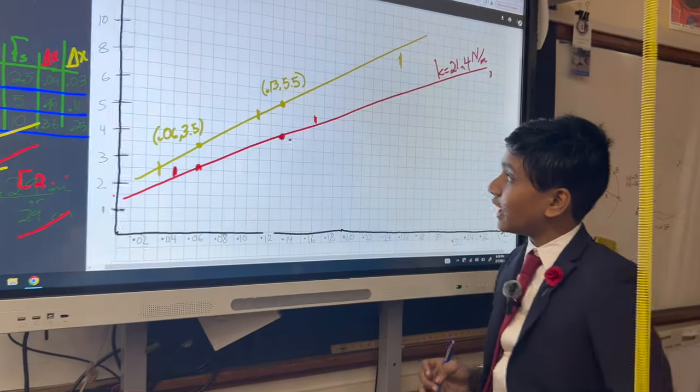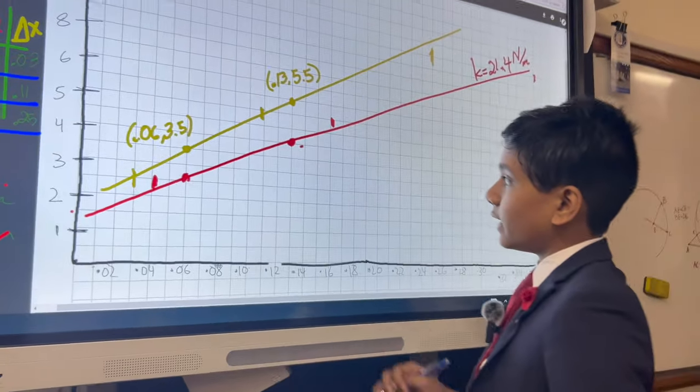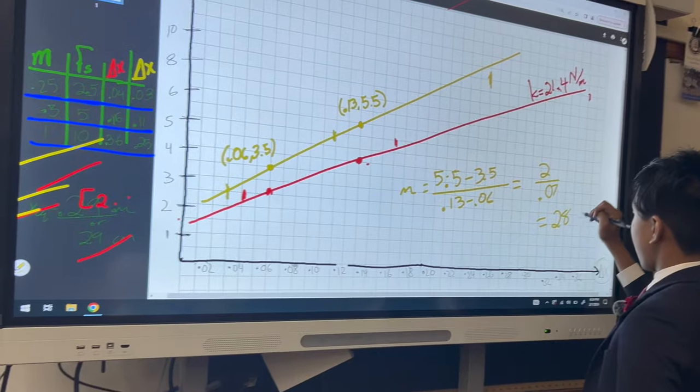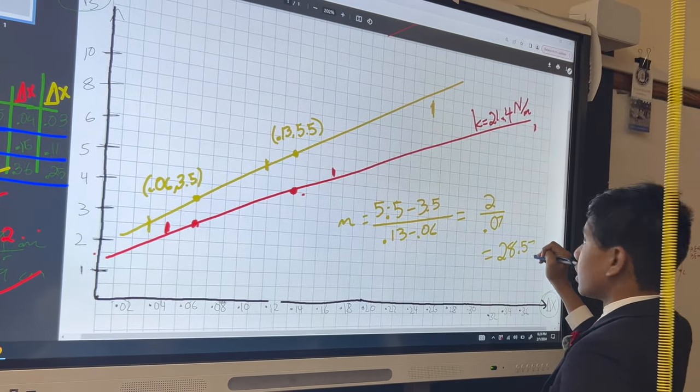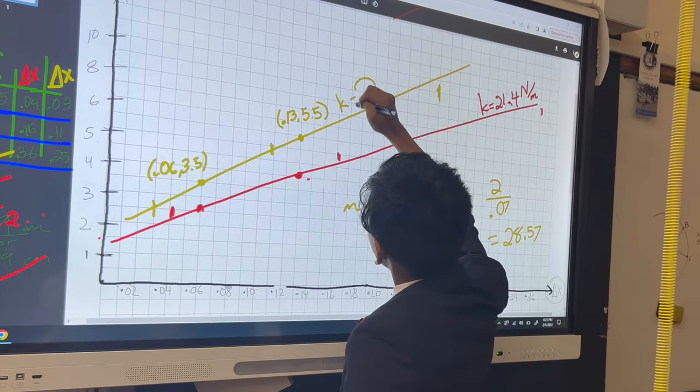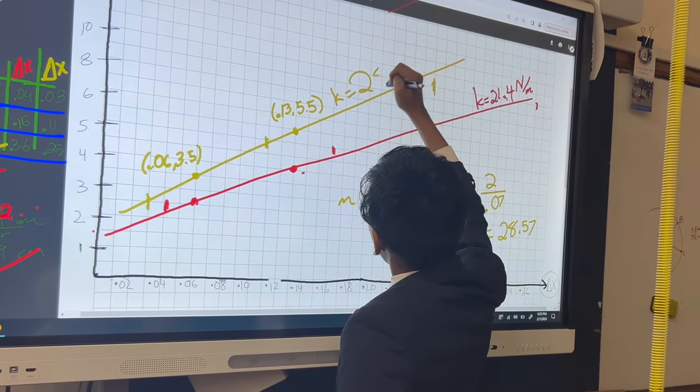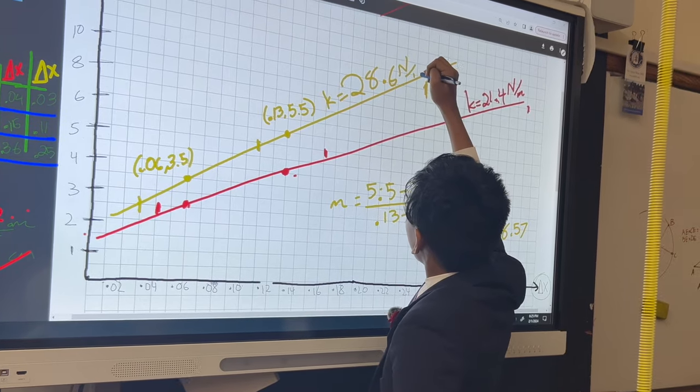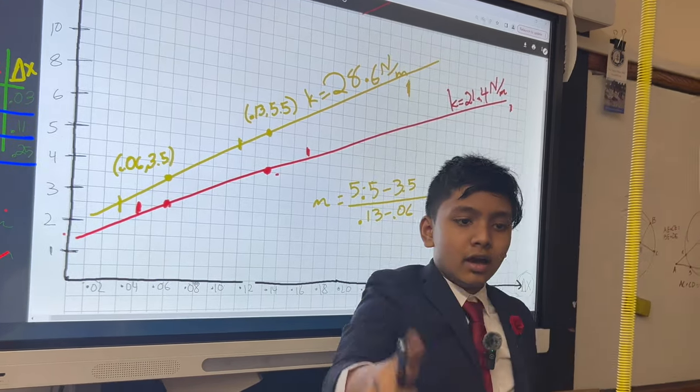All right. So now that means the slope is... So as you can see, it's quite a bit stronger than the other spring. There we go. So we've determined it.